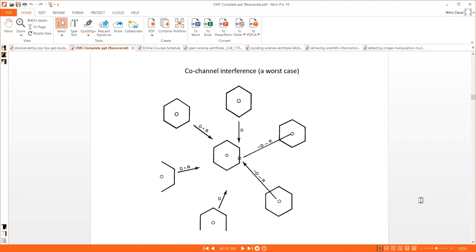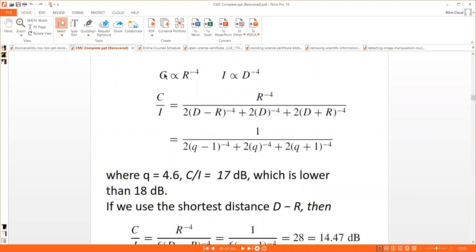We know the carrier C is proportional to radius R, and interference I is proportional to distance D. When we calculate the carrier to interference ratio C/I, we use the formula. The carrier is directly proportional to R^4, interference to D^-4. When you substitute these values, you can see R^4 in the numerator.